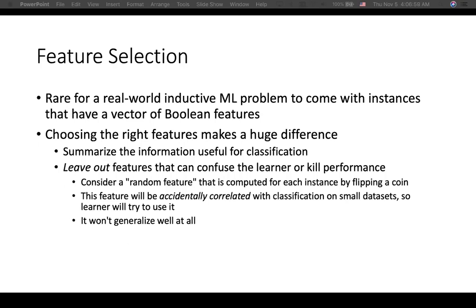Imagine having a very random feature from nowhere sitting in your dataset. You're going to use this random feature that is computed for each instance by basically flipping a coin, so it's super random. This feature will be accidentally correlated with classification on small datasets, so the learner will try to use it. The model gets trained and learns from this spurious correlation, which is not really helpful for your learner, and it creates the generalization problem again.